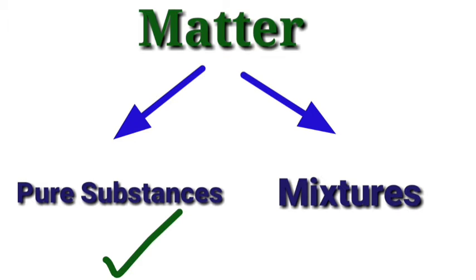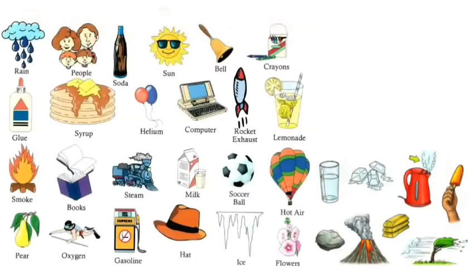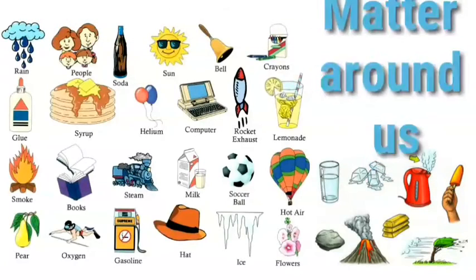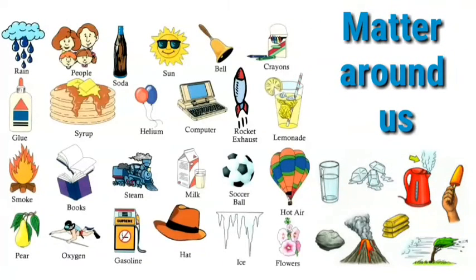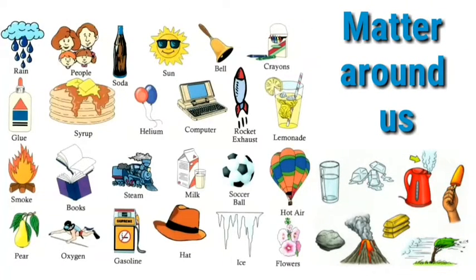We are going to start the introduction of Pure Substance. For example, water is a pure substance. We will add a couple of examples: air, water, salt, and detergent powder. Detergent powder is a matter.